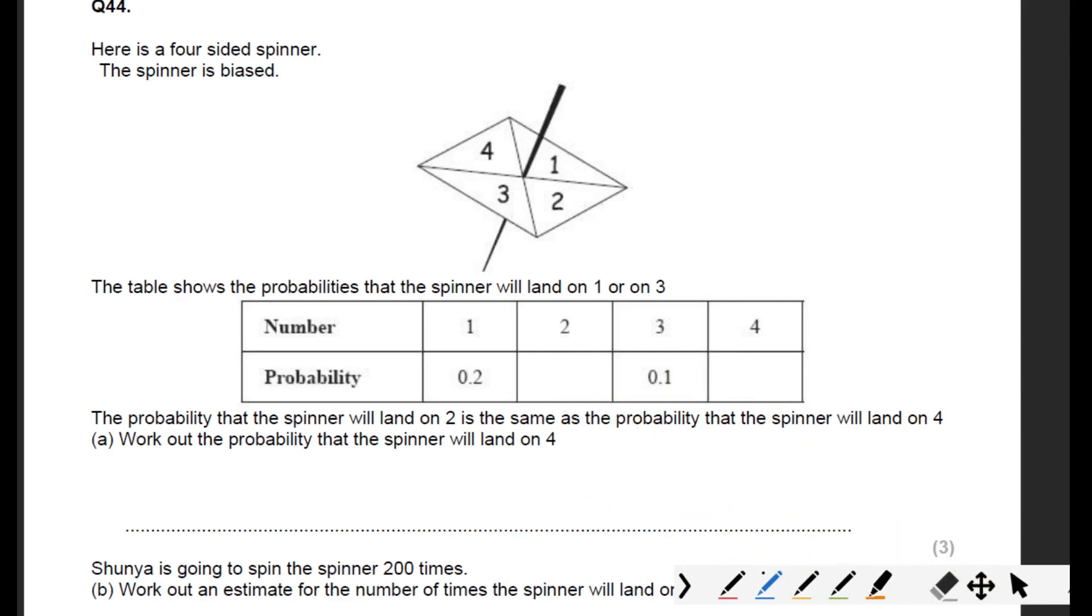We're going to work out the missing values. All probabilities add up to one, so we're going to add these up and then take away from one. 0.2 add 0.1, and then all probabilities add up to one, so take away from 0.3 leaves you with 0.7.